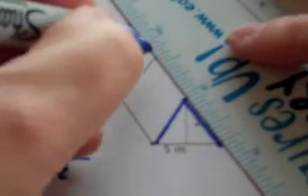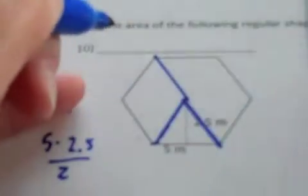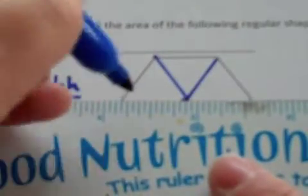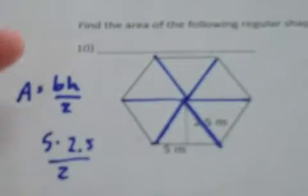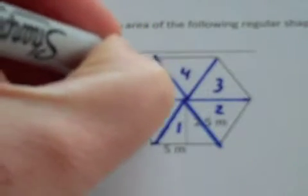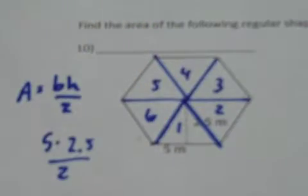But then what your teacher showed you is that what you could do is extend all of those lines and really, how many triangles happen to be inside of this particular shape? Well, this particular shape has one, two, three, four, five, six triangles. So what you could do is after you find the area of one triangle, you could multiply that value by six and find the area of the entire regular shape.